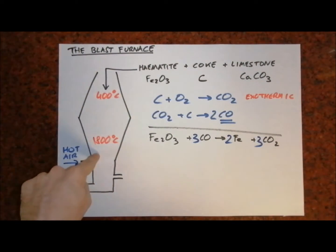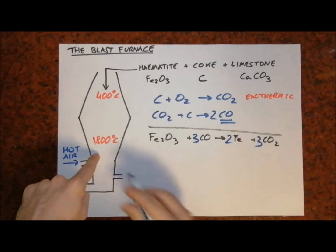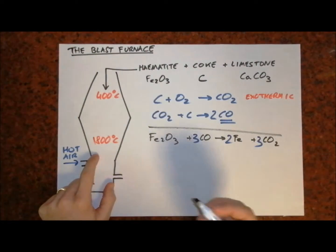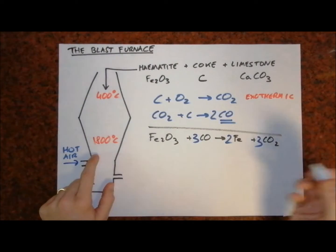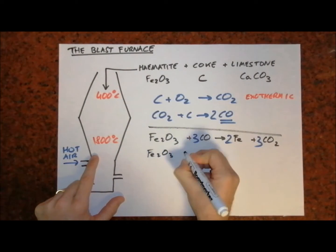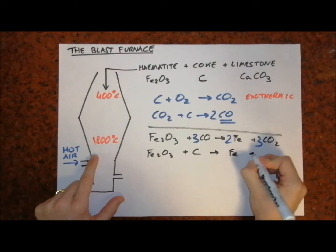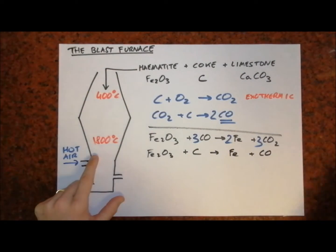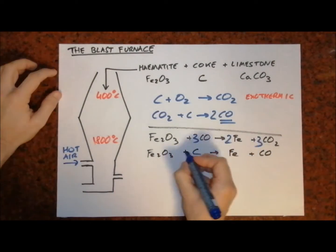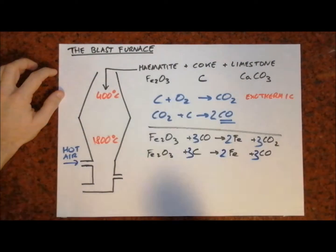In the hotter parts of the blast furnace, lower down, the iron three oxide is also reduced to iron by carbon itself, giving off the toxic gas carbon monoxide. Iron oxide plus carbon gives iron plus carbon monoxide. The balancing is quite straightforward — it's exactly the same as the one above.